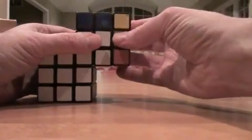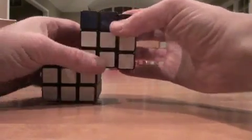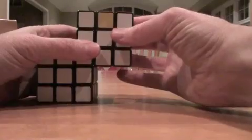R, U, R prime, U, R, 2U, R prime. And that actually puts all that into position. And then we can continue to solve it the way that we've solved it before.